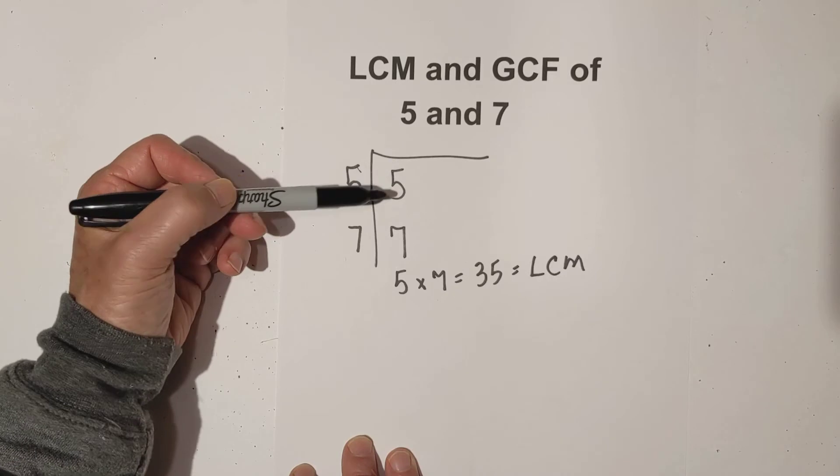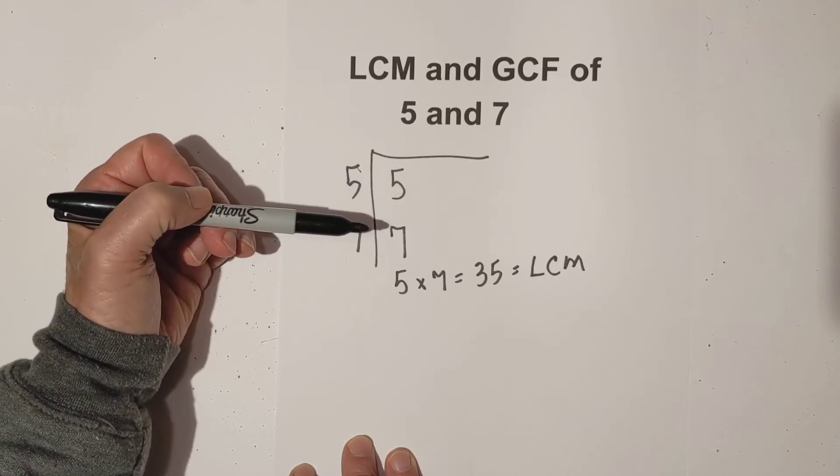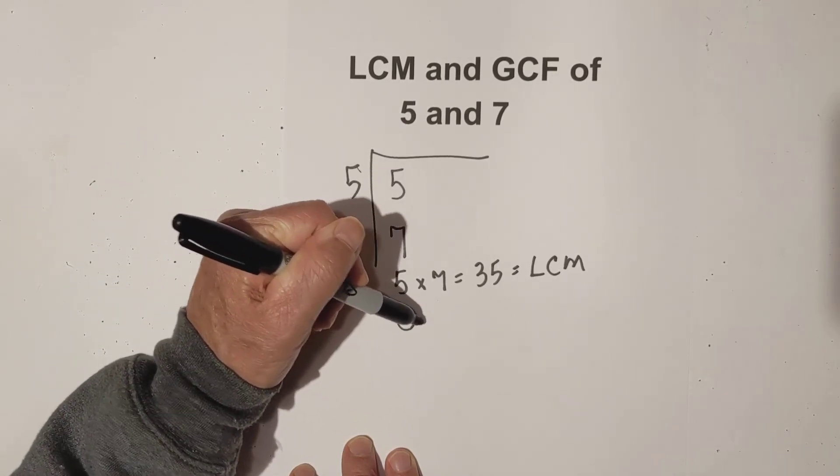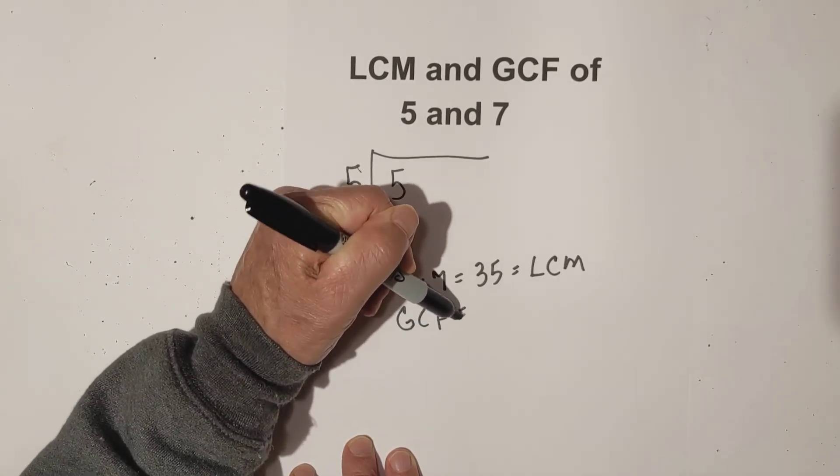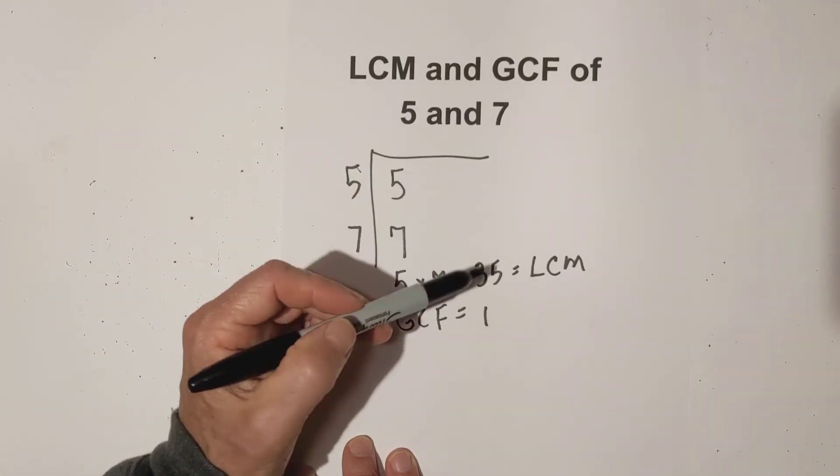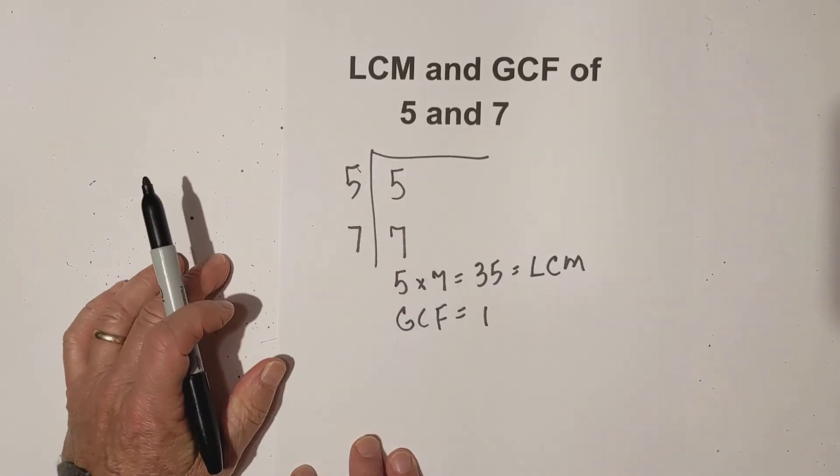Well I only have 1 5 or 1 7. So I don't have anything that qualifies. So therefore the GCF would equal 1. So in summary the LCM of 5 and 7 is 35. And the greatest common factor of 5 and 7 is 1.